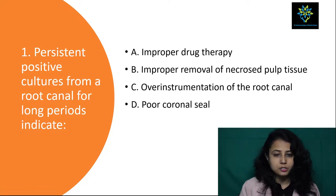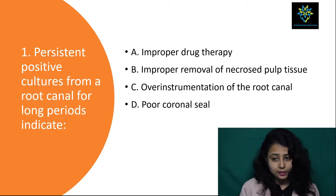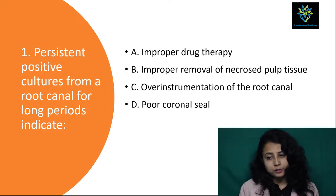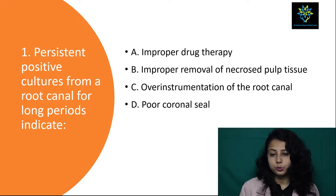First one is: persistent positive cultures from a root canal for long periods indicate — No. 1, improper drug therapy; No. 2, improper removal of necrosed pulp tissue or over instrumentation of root canal; then poor coronal seal. Which one will you choose?